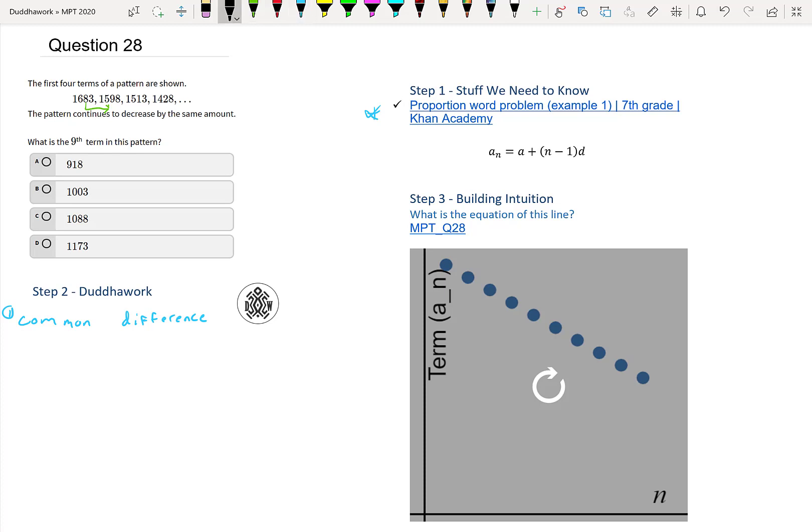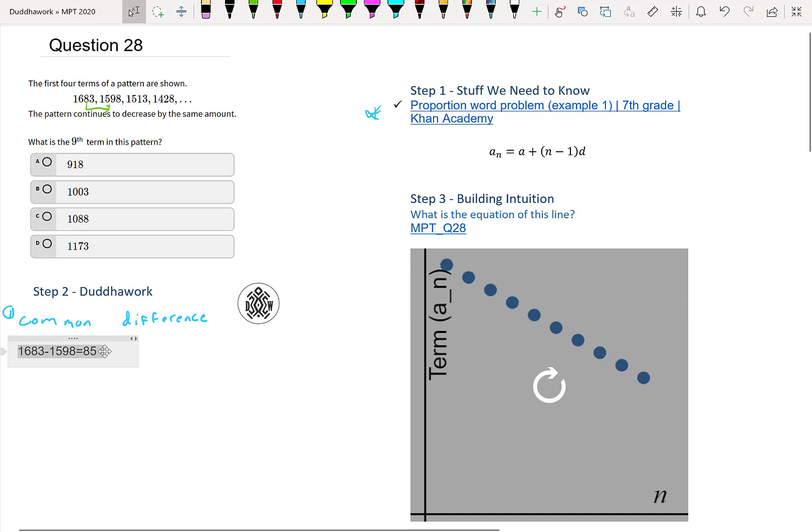And to do so, what we would do is just, I'll do it with a calculator just so we're sure here. It'd be 1683 minus 1598, and that's 85. So the common difference is we subtract 85 every time. And we can check this by doing the next pair of numbers.